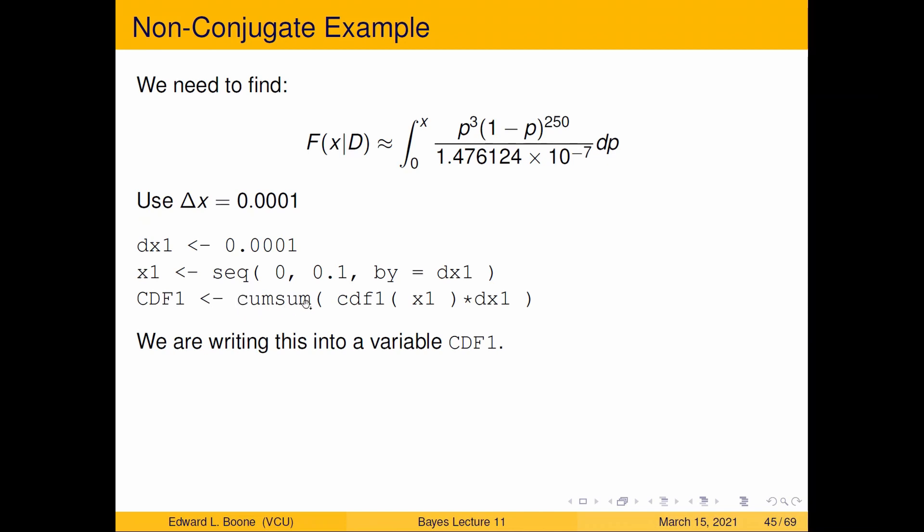Then I'm going to use this function. Instead of using sum, I'm going to use cumsum. Cumsum is going to give me the cumulative sum of this, meaning that at every new point, it's going to give me the sum of the previous points up to that point, of my height times my width, and just adding them up. I'm going to write this into a variable called cdf1 so I can look at a picture of it.